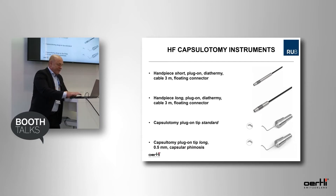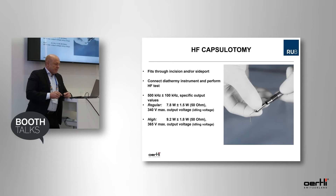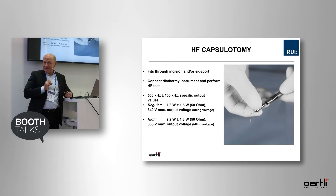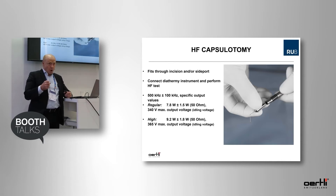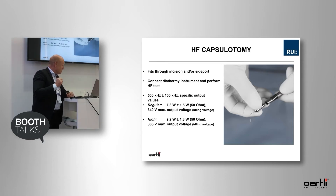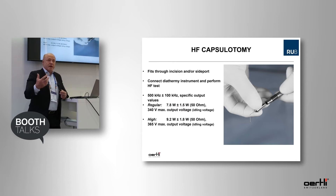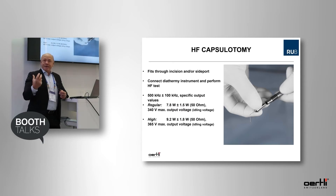The tip is 0.5 mm. Here you see the specifications. This fits through the side port incision, which is good, but also through the main incision. If you go through the main incision, you want some OVD in the AC; but if not, you can irrigate with one hand while the high-frequency tip goes through the other paracentesis. We are talking about 500 kilohertz as the specific output value, regularly at 7.8. But interestingly, you can even increase this if there is a really dense plaque and you need more energy.